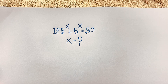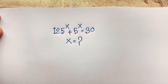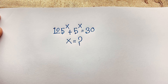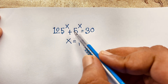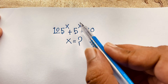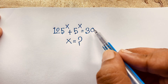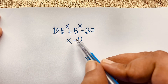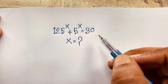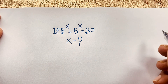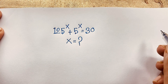Hello everyone, welcome to Rasha's Classroom. Today we have solved an interesting viral exponential math problem, which is 125 to the power x plus 5 to the power x is equal to 30. x is equal to what? How to solve this interesting math question?